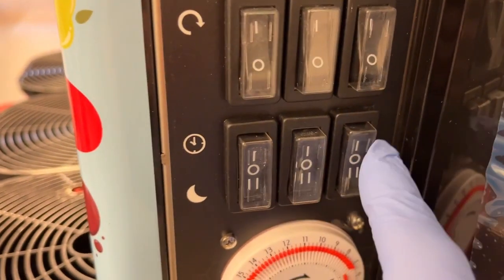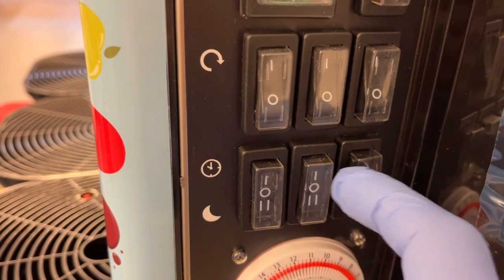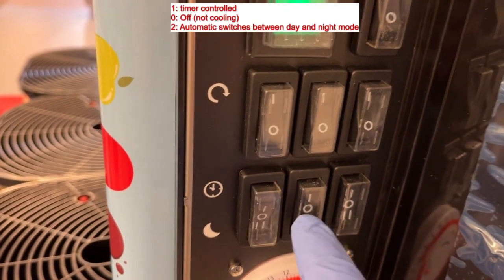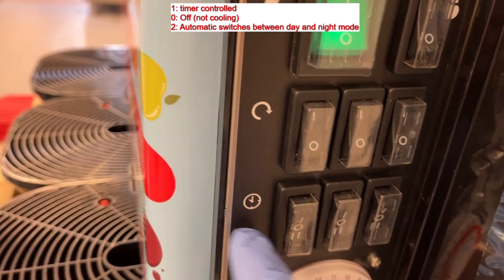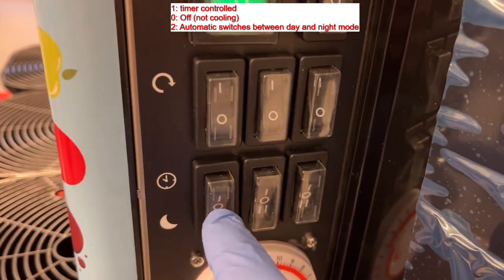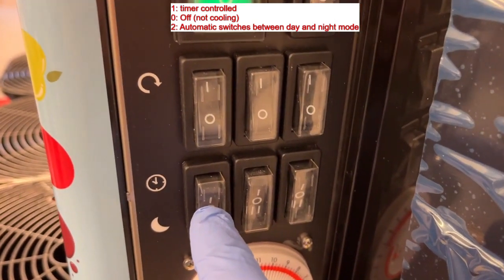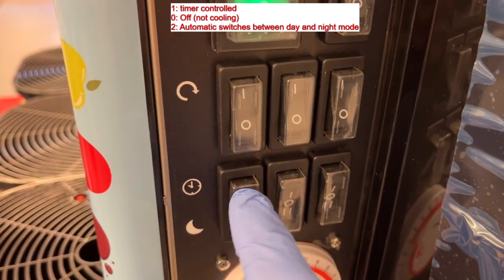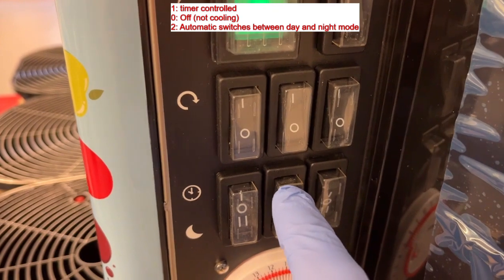And so here we have this combination switch. Now it's at 0 in the middle position. If you press 2, it will be on the night mode. It will be liquid only, it will not produce any slush. We want to use the timer function.